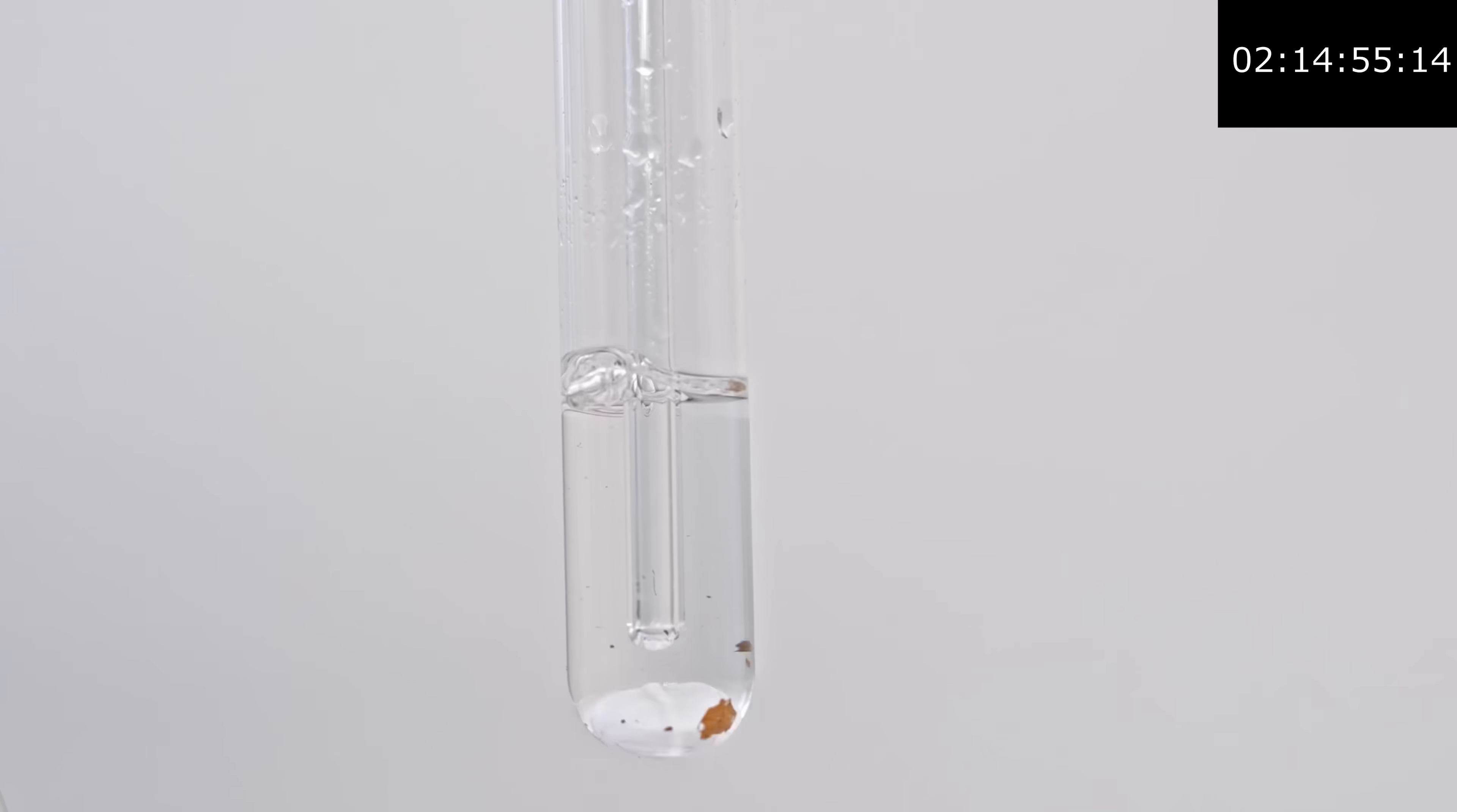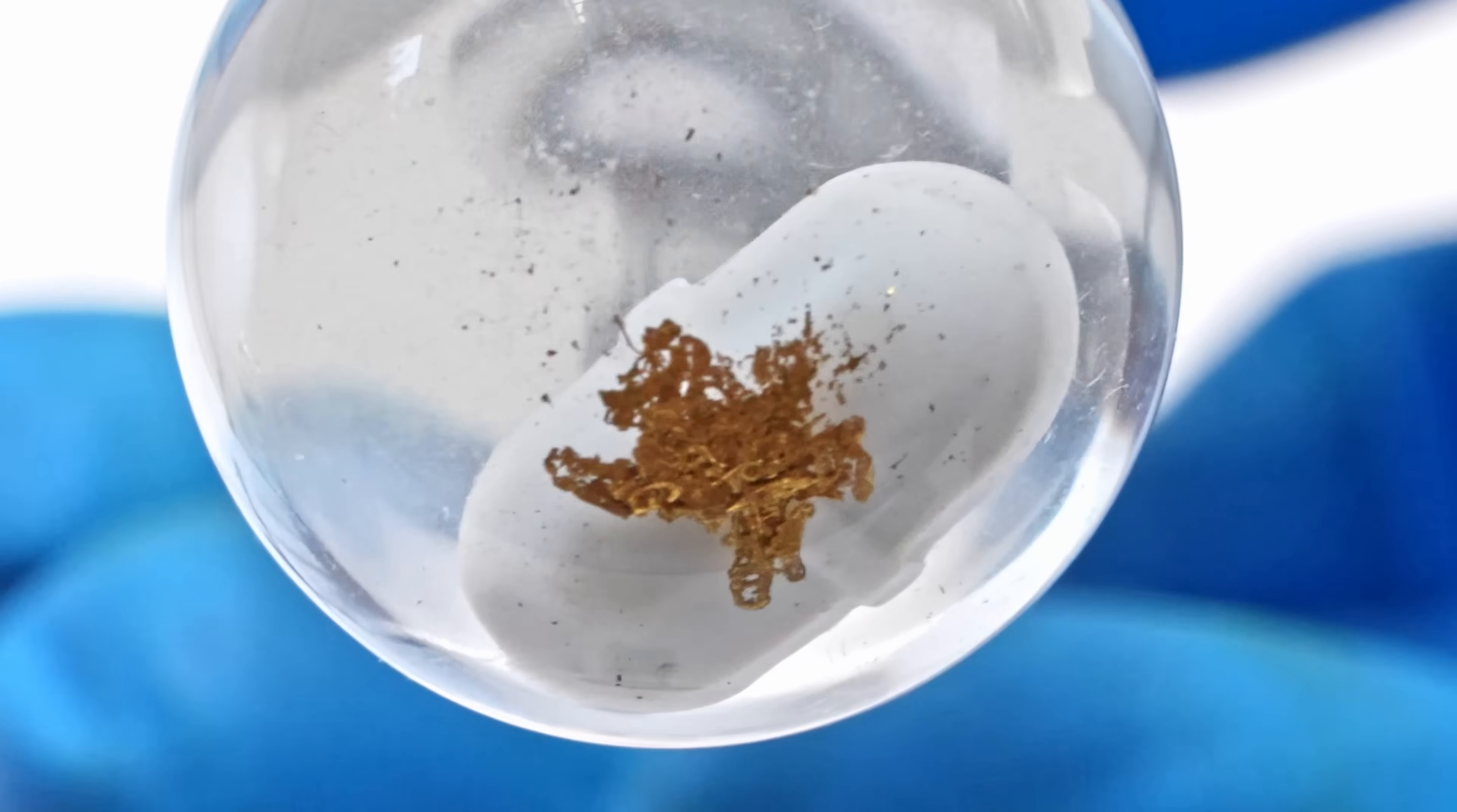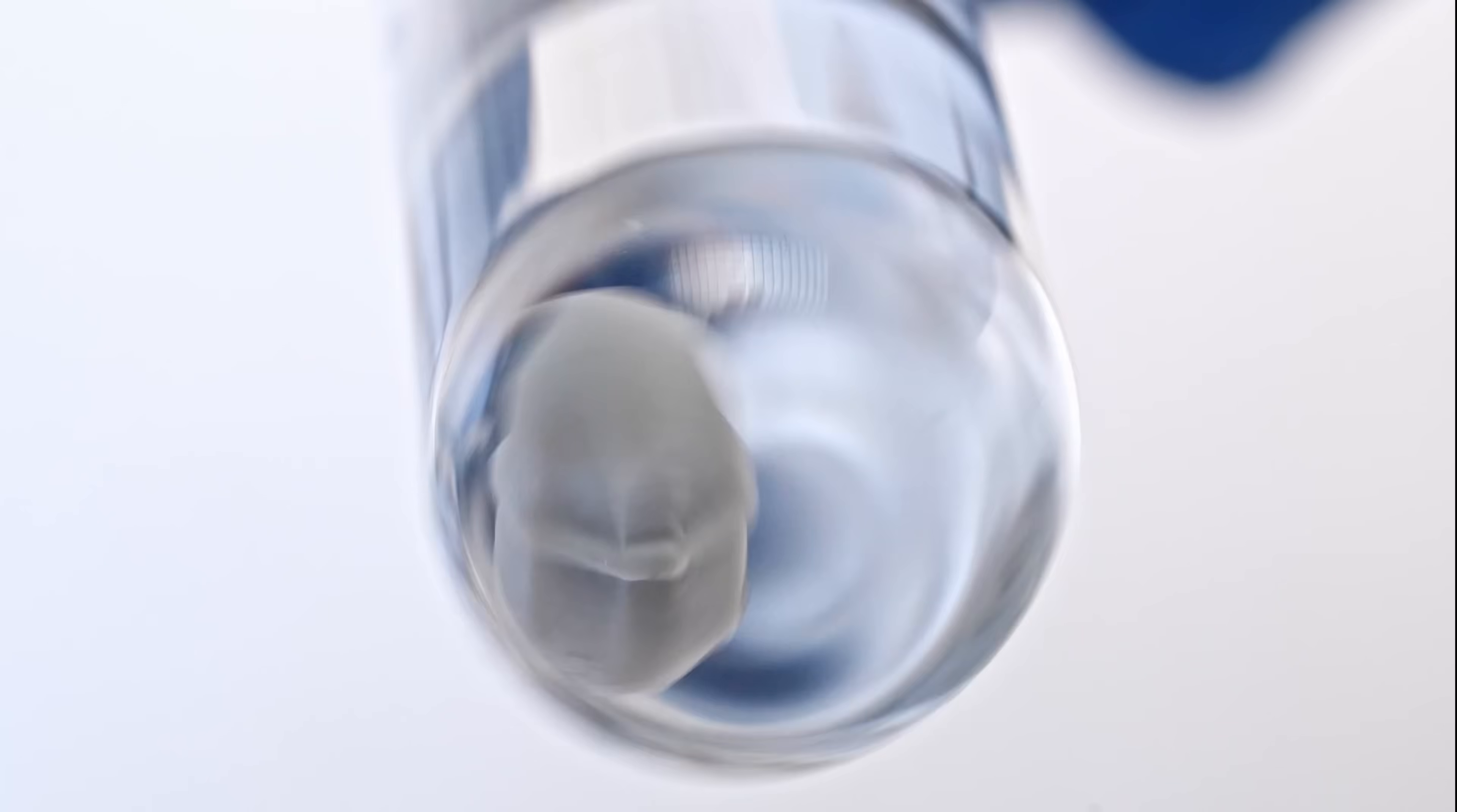However, then the ingot stopped dissolving so quickly, and I had to dissolve it for more than 10 hours, and even heat the solution a couple of times. In the end, I managed to dissolve the gold ingot using a 2% solution of potassium cyanide two times and heating.